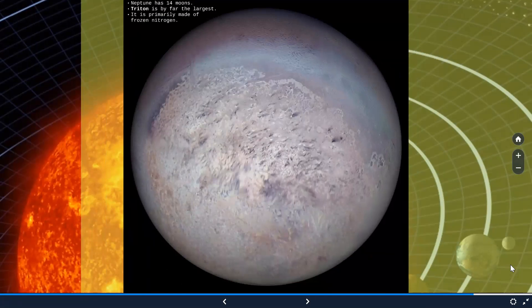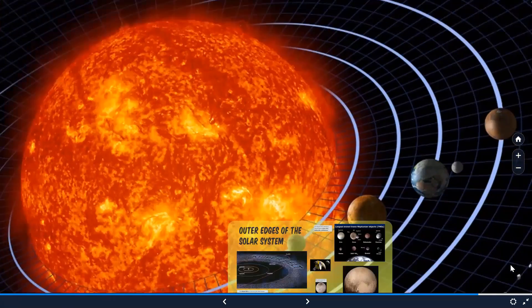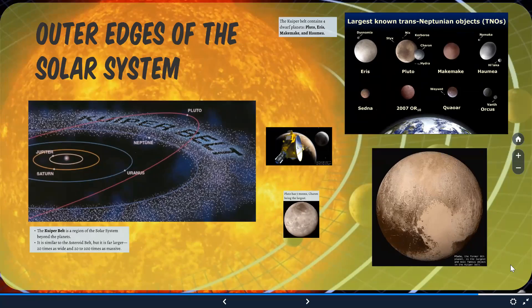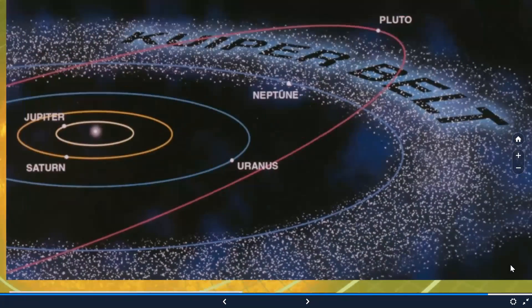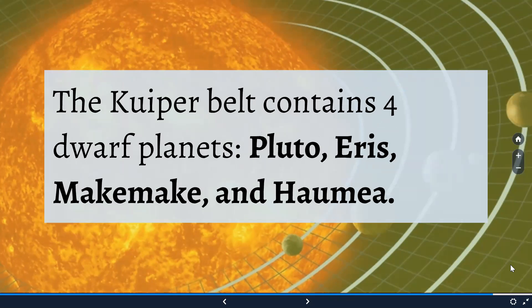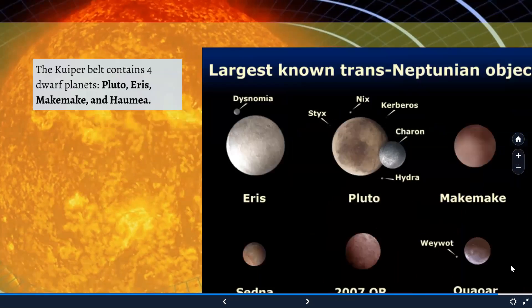Beyond all eight planets, in the outer region of the solar system, there are some exciting objects. The Kuiper Belt is a region of the solar system beyond the planets, similar to the asteroid belt but 20 times wider and 20 to 200 times as massive. In the Kuiper Belt there are four dwarf planets: Pluto, which was previously classified as a planet but is now classified as a dwarf planet; and additionally Eris, Makemake, and Haumea.